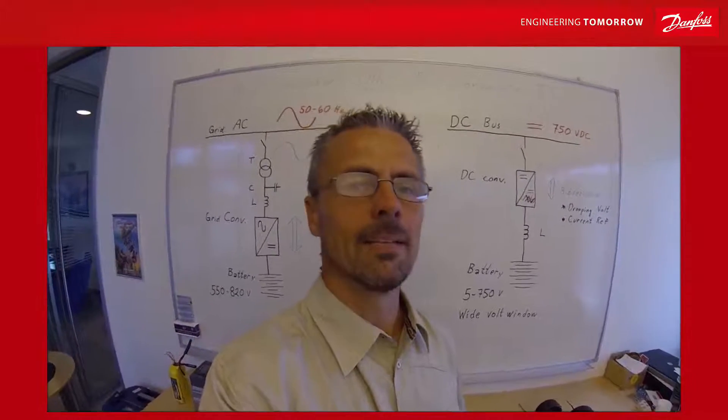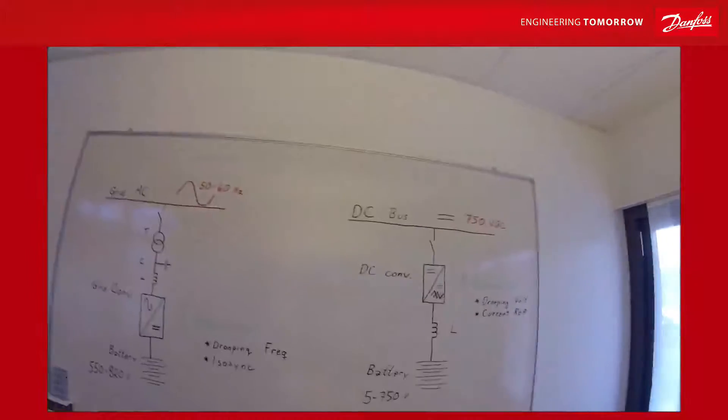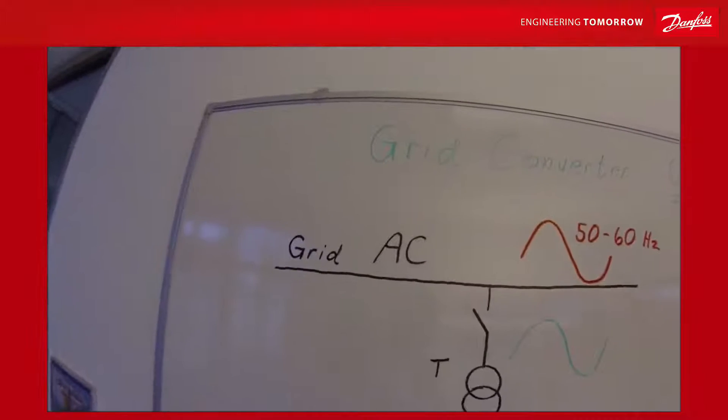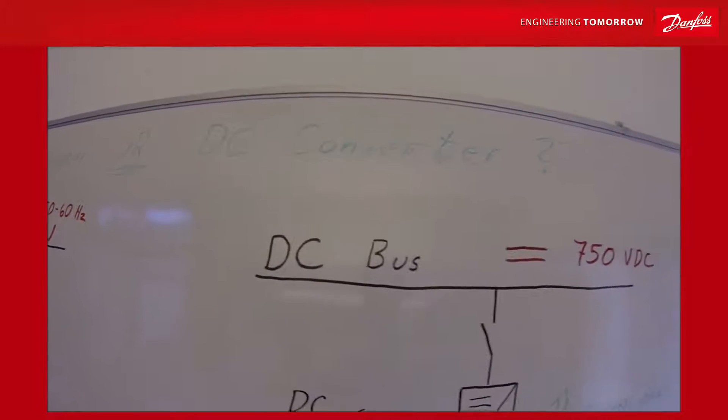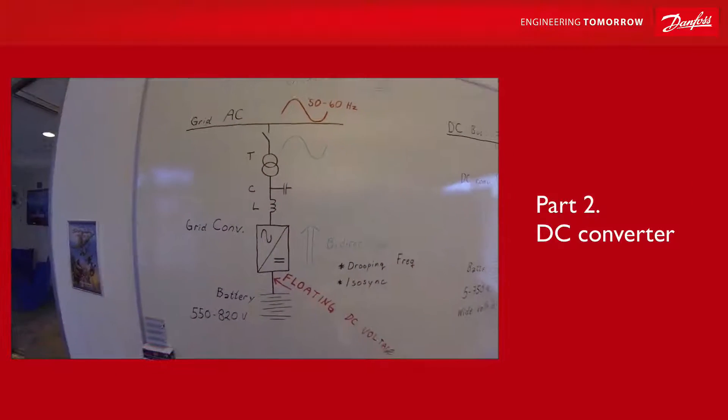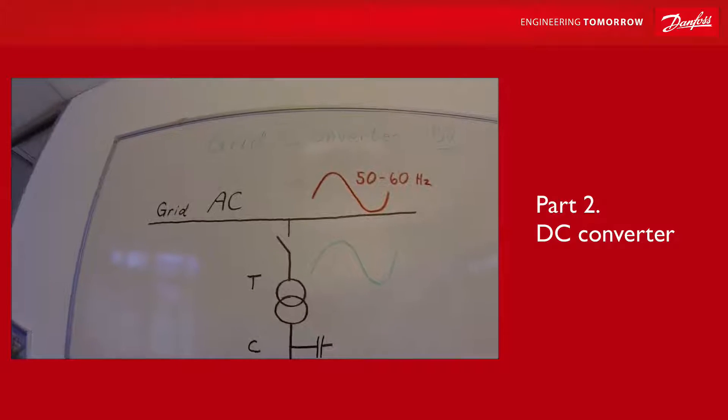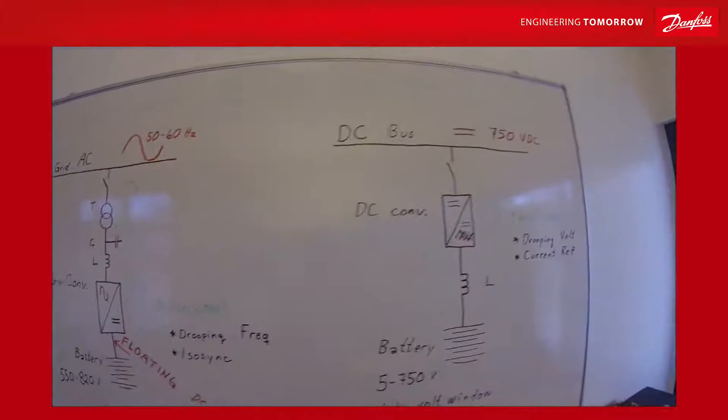So we are going to take a look at should we select the grid converter or should we select the DC converter for our application. The grid converter is used directly on the AC grid. Let's take a look at the other way of connecting a battery to an industrial system.